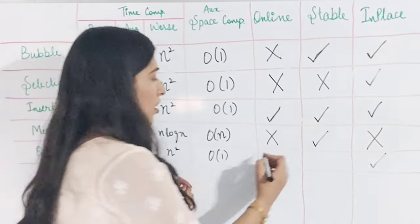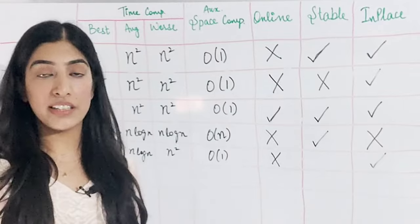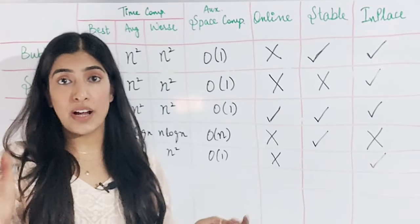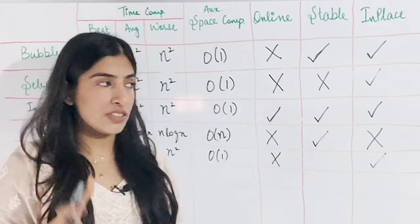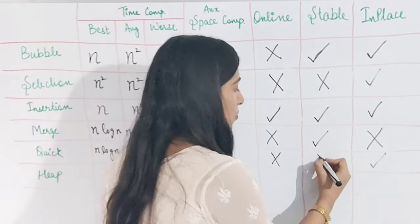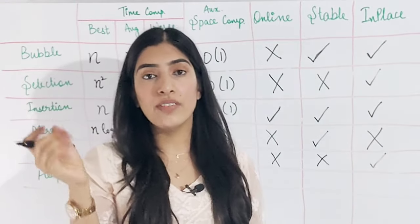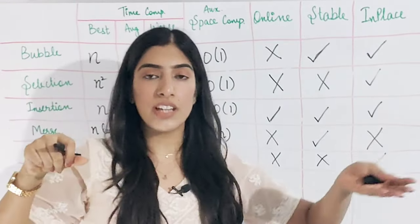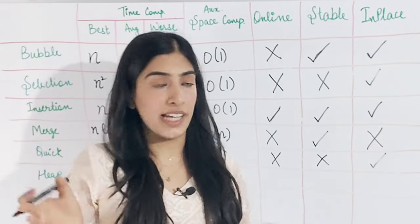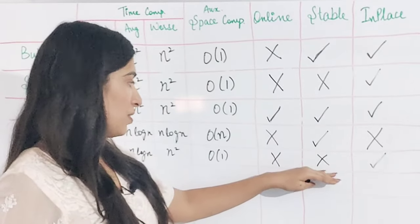Is quick sort online? No — if we get more elements randomly in between, it won't work because we have already divided our array into two parts according to the pivot. Is it stable? No, it is not — because when placing elements on the left or right side of the pivot, we swap with a random element, which messes up the order.